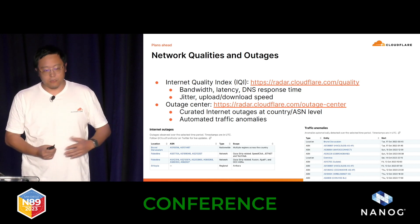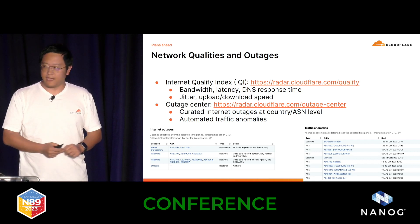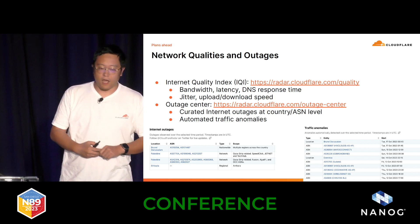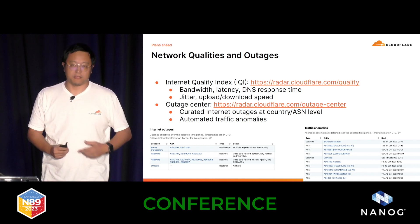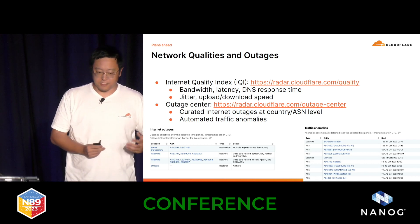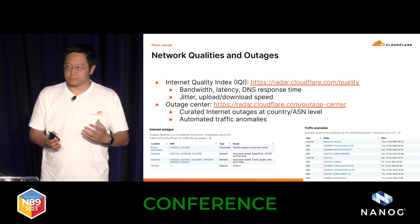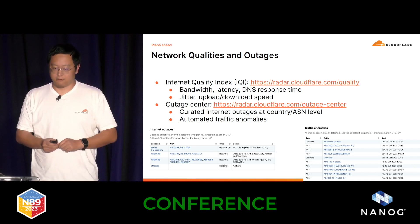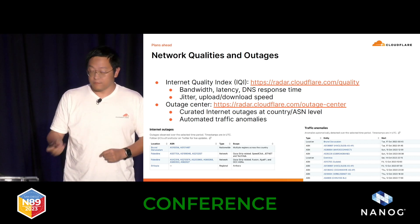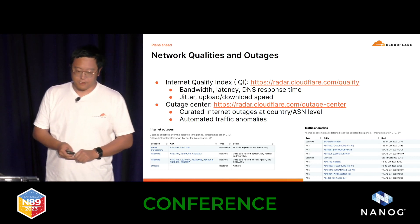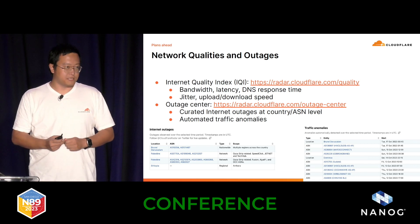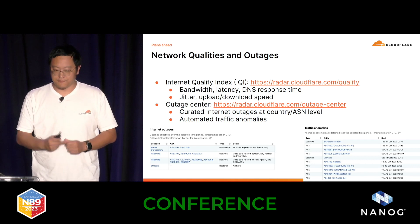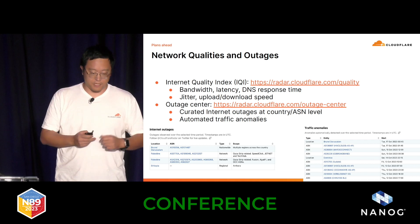Recently we also introduced another section called the Internet Quality Index, which is a broad measurement study on bandwidth, latencies, DNS response time, and other types of measurement on different networks — trying to produce insights on whether a given network is providing good internet quality. Apart from internet quality, we also have an Outage Center, which is a curated list of internet outages produced by both automated systems and experts who manually inspect all detected outages.